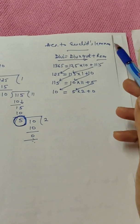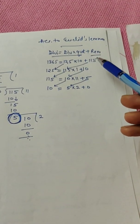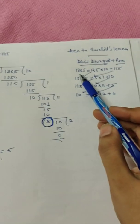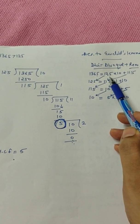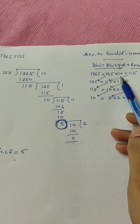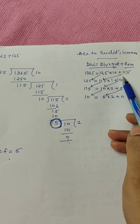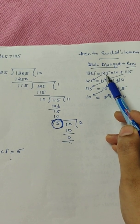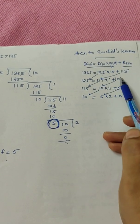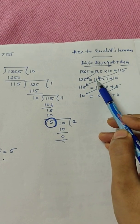And according to division lemma, if you're going to write it in statement form, it can be written as 1365, that is your dividend, is equal to 125, that is your divisor, into quotient that is 10, plus your remainder 115. Now in the next step, your divisor will become your dividend and your remainder will become your divisor.